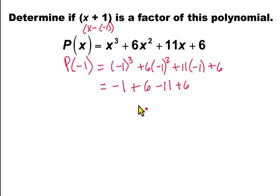So we combine the negative terms to get negative 12, and we combine the positive terms to get plus 12. These terms cancel each other out and we get 0, so x plus 1 is a factor of this polynomial.